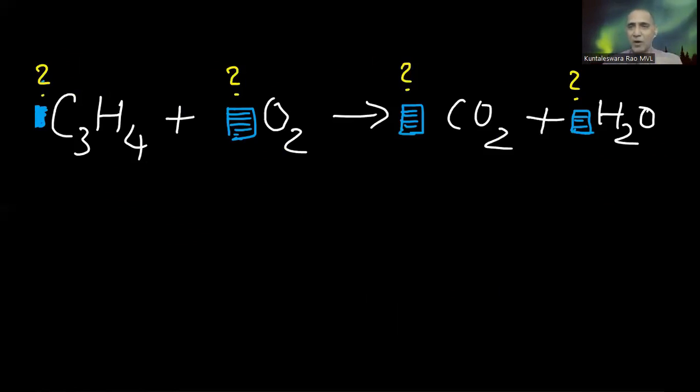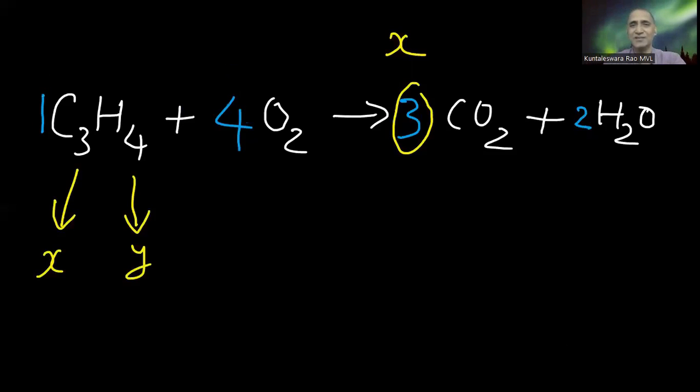Before every component, coefficients are written. We don't know the coefficients. How to balance it? This is the balanced reaction. C3H8 propane. X, number of carbons. Y, number of hydrogen atoms.